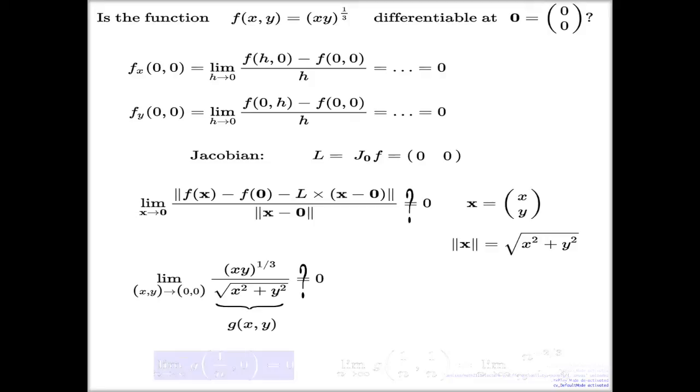Now I can try a horizontal approach, (1/n, 0). It's a very easy approach. This approach will deliver 0 limit, right? Because y is 0, the numerator will be 0 constantly. That's why the limit will be 0.